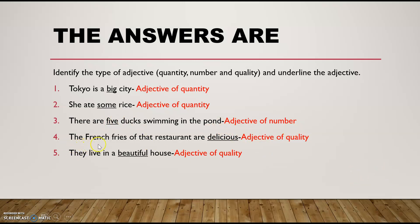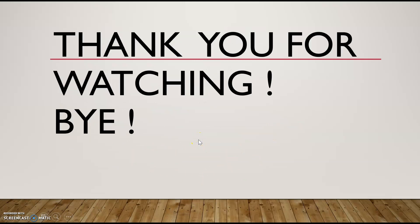Number four: 'The french fries of that restaurant are delicious.' 'Delicious' is the adjective and this is the adjective of quality. Number five: 'They live in a beautiful house.' 'Beautiful' is the adjective and it's the adjective of quality. Thank you for watching this video. Please like and subscribe. Bye!